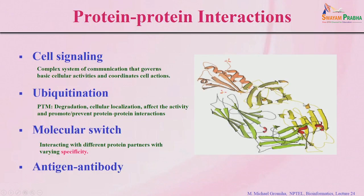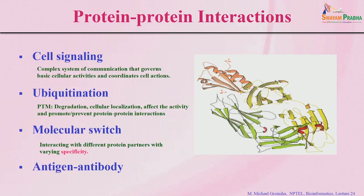For example, if you take protein interactions, they are involved in various processes such as cell signaling — a complex system of communication that governs basic cellular activities and coordinates cellular actions. Post-translational modification can affect activity and promote or prevent formation of protein-protein interactions. Several protein-protein complexes act as molecular switches, interacting with different proteins with varying specificity. Likewise, antigen-antibody interactions are central to immunological processes, helping understand how bacteria and viruses are identified.